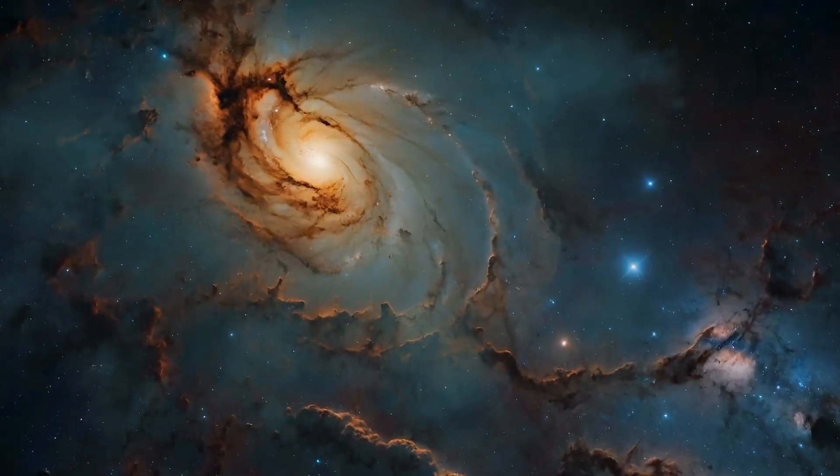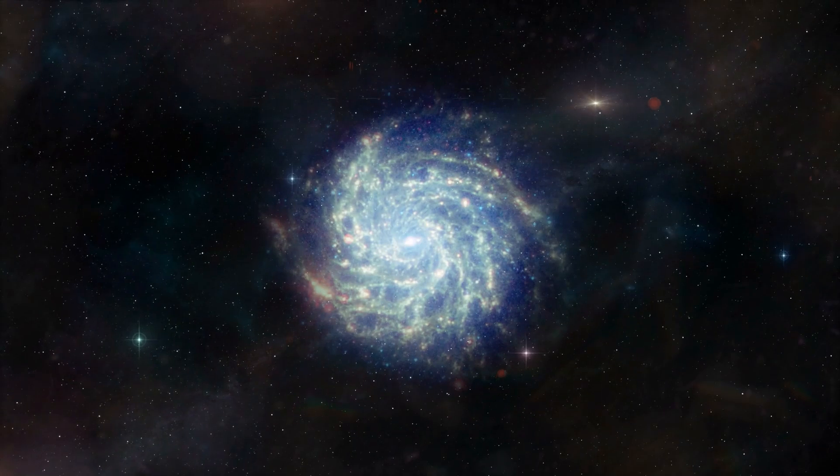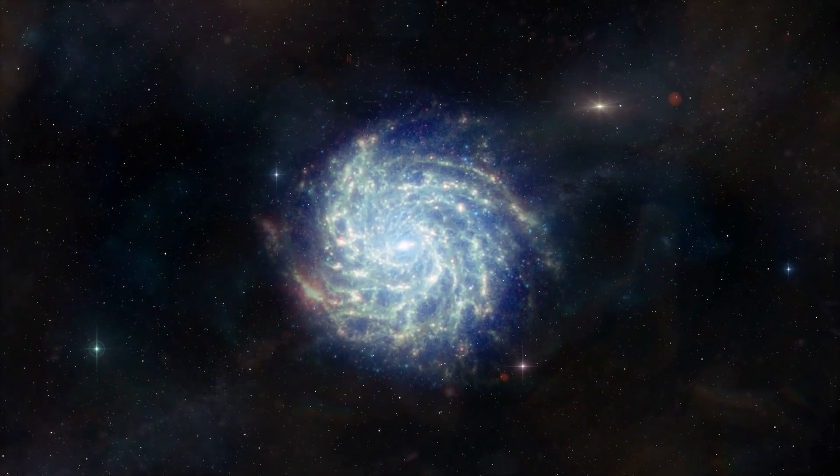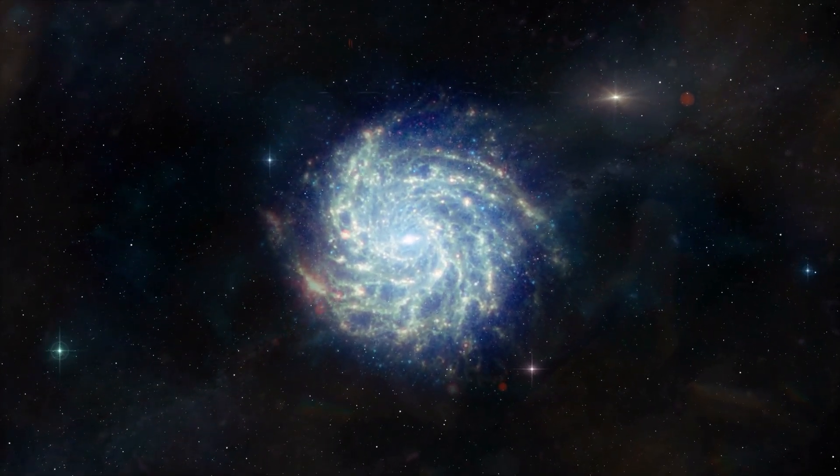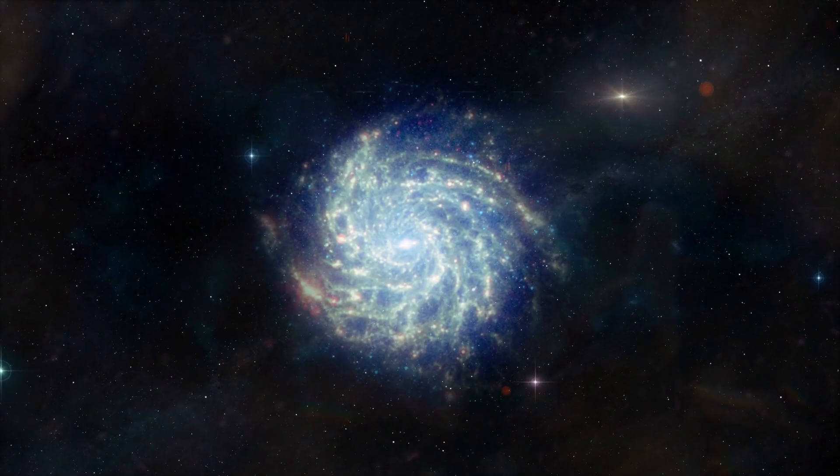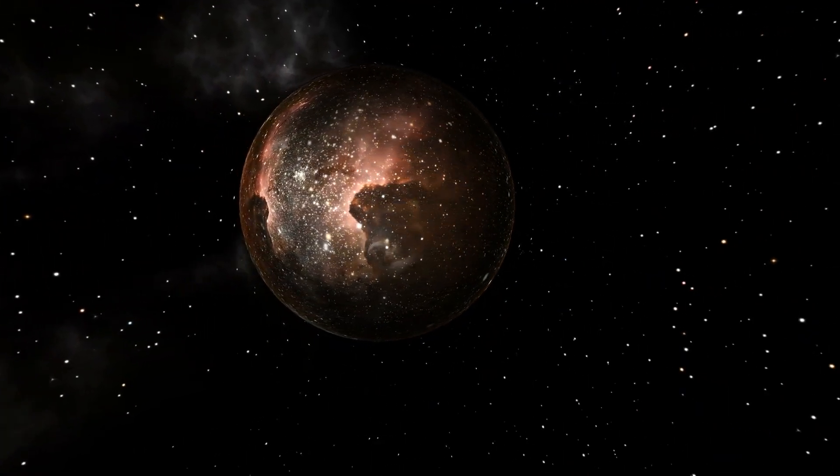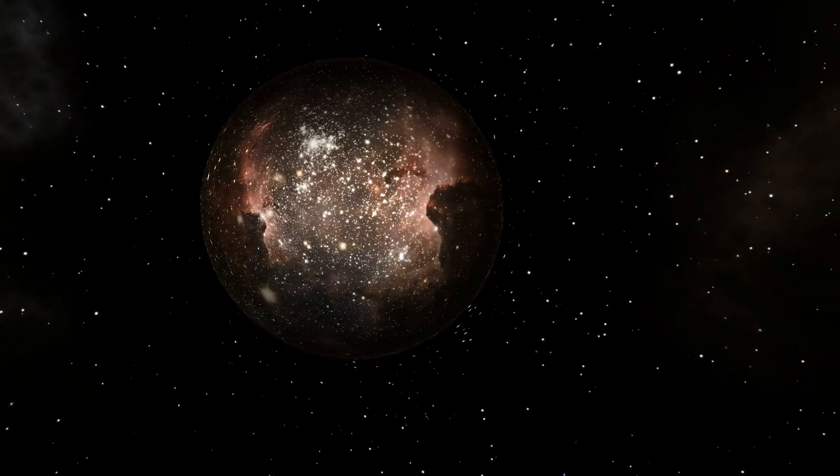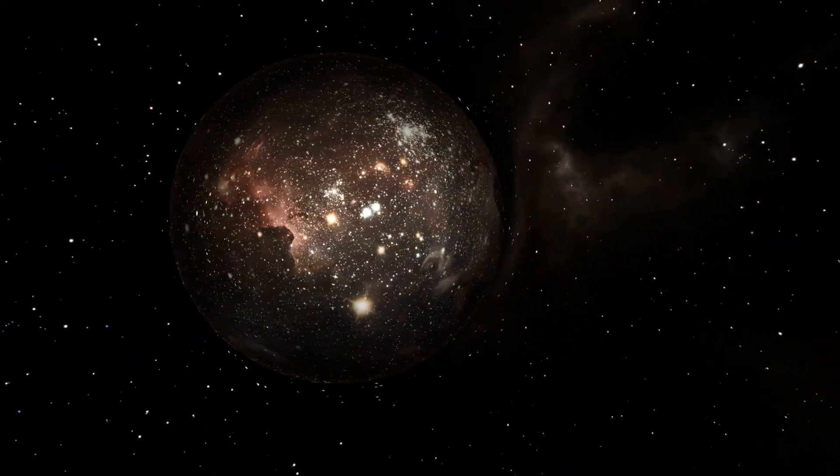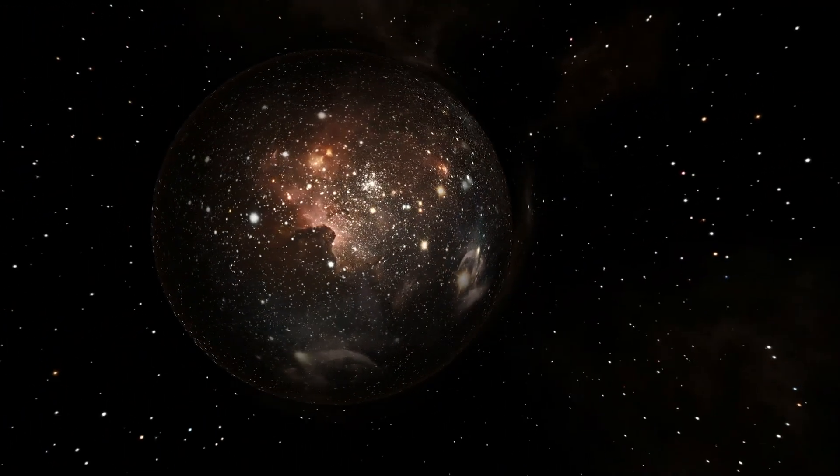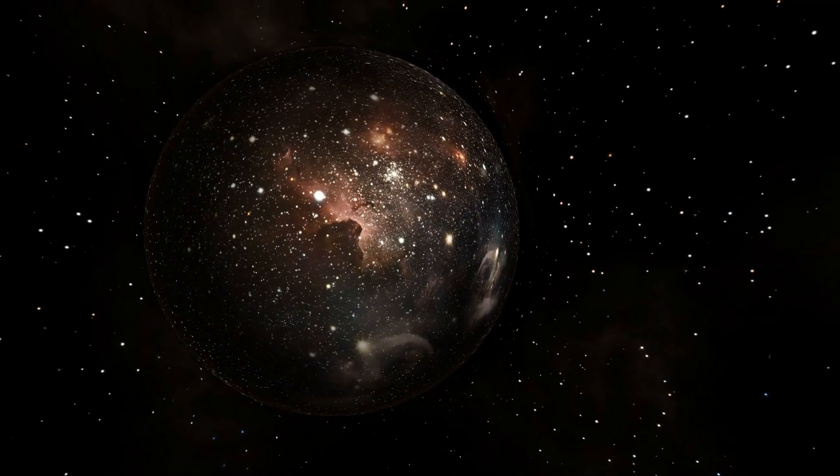If our universe inherited matter, structure, or momentum from a previous reality, those galaxies might not be early anomalies, but leftovers from what came before. Suddenly, things start to make sense. A directional imprint, a head start on galaxy formation, and an altered expansion history, all explained by one bold idea.